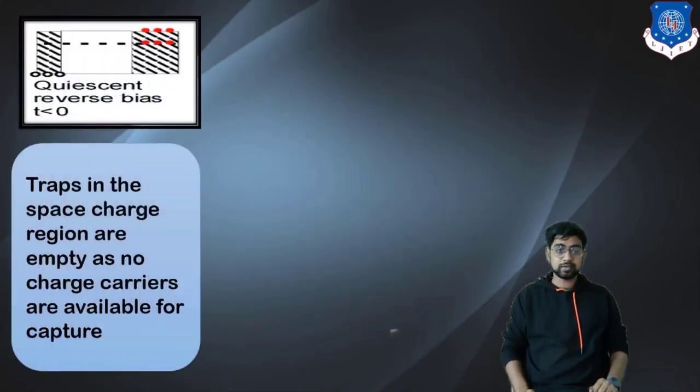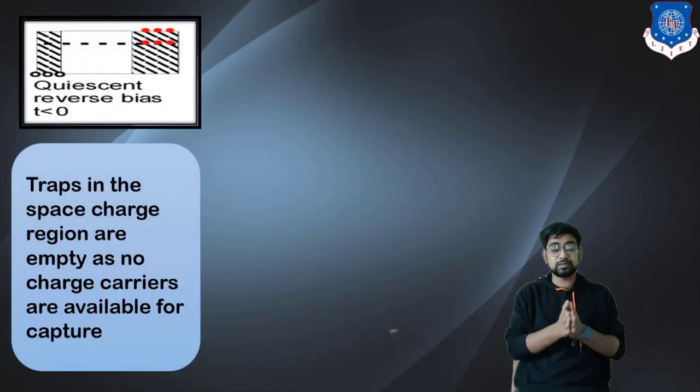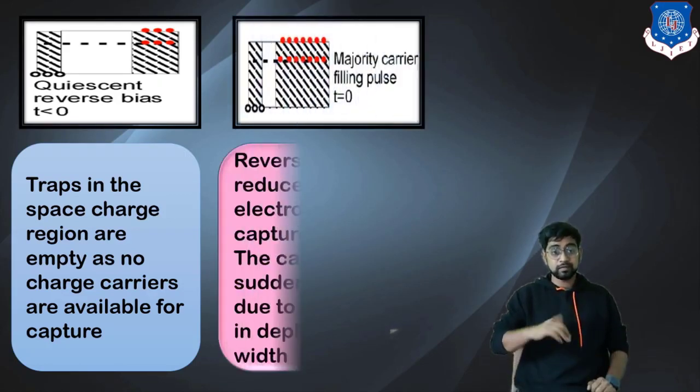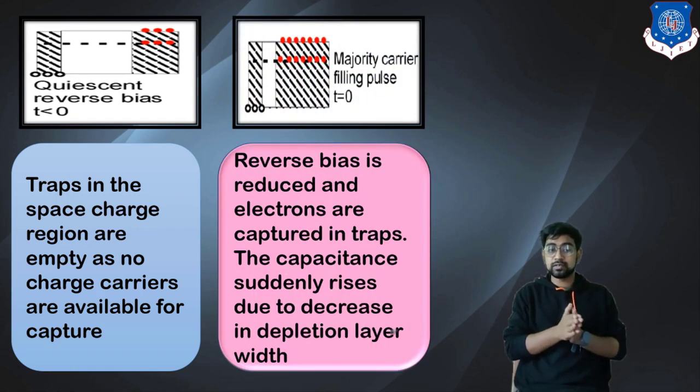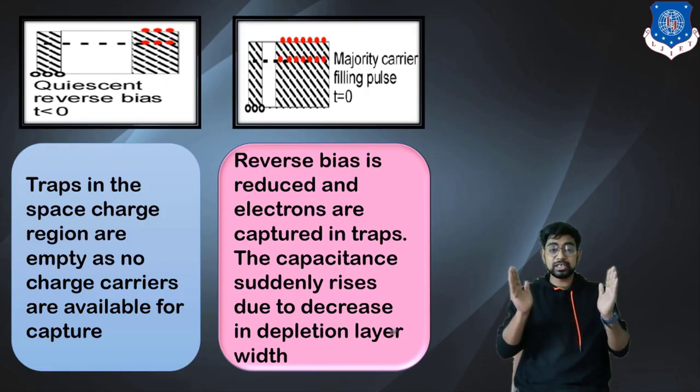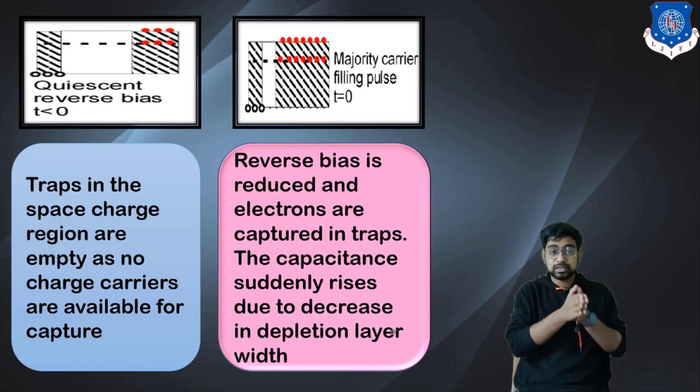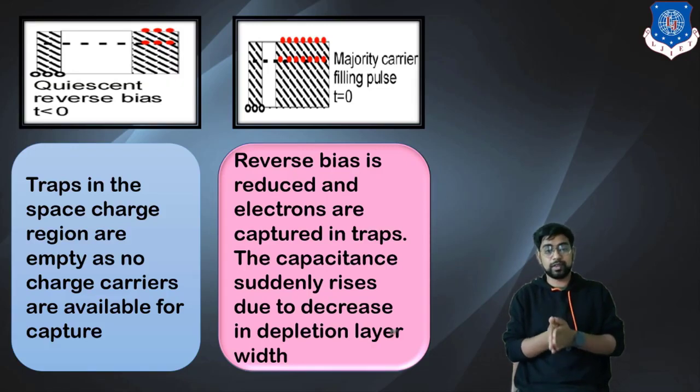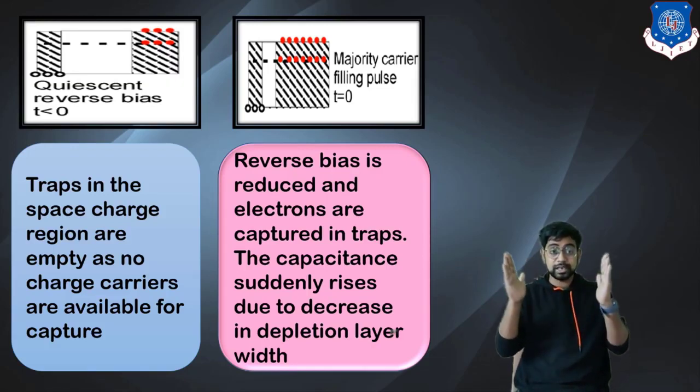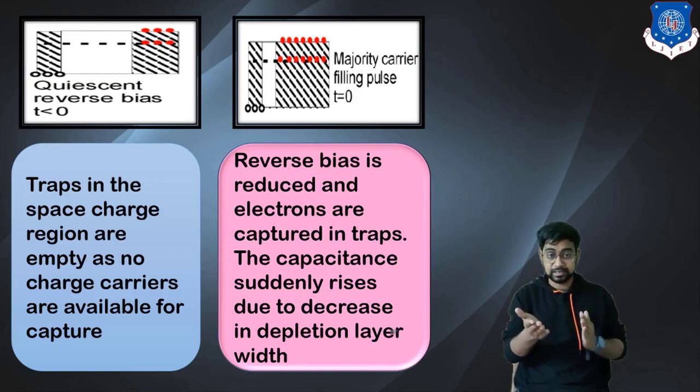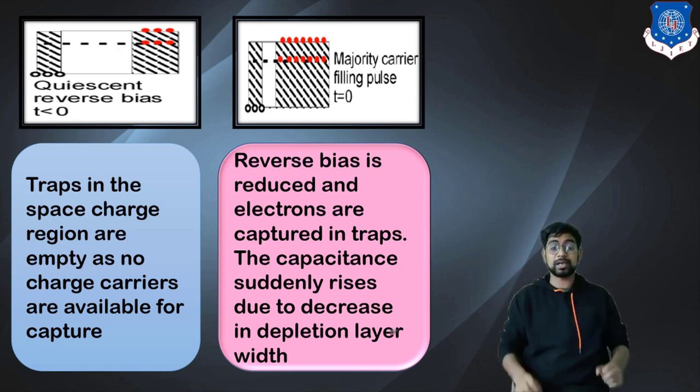The first step: when the junction is reverse biased, T is smaller than zero. Traps in the space charge region are empty as no carriers are available there to capture. Once we have given the short pulse, reverse bias is reduced. As the reverse bias is reduced, the depletion width decreases and electrons are captured in traps. The capacitance suddenly rises due to decreasing depletion width. As the reverse bias is reduced, the depletion width is reduced and the capacitance has increased. The electrons are trying to recombine with the holes.